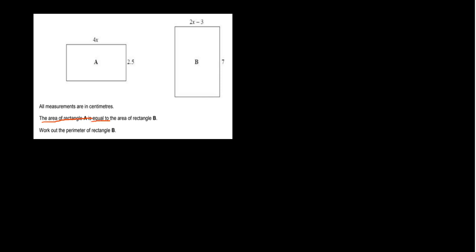the area of rectangle A is equal to the area of rectangle B. So that one statement, one sentence, is asking me to do three things. It's asking me to find the area of rectangle A, find the area of rectangle B, and then make them equal to each other. That's what I need to interpret from the question.